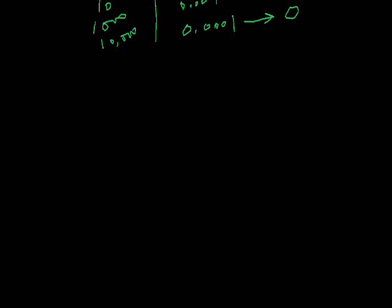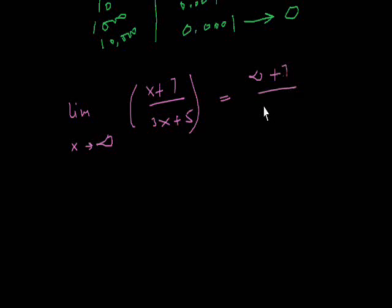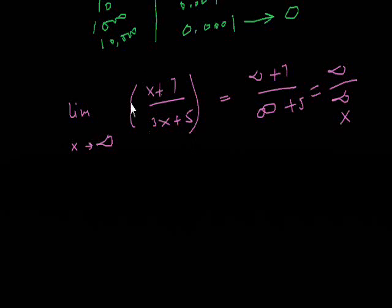Suppose limit as x approaches infinity of (x + 7) divided by (3x + 5). If I just put this value in this, this is x plus 7 infinite, 3x into infinite, infinite plus 5. I cannot write just infinity divided by infinity, this is wrong. I will use another approach by solving this equation.